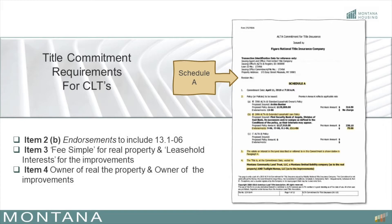Title insurance for community land trusts is handled a little differently from a regular transaction. As such, there are additional requirements that we need to have in order for Montana Housing to purchase the loan. The title commitment must be an extended leasehold loan policy, listing all the endorsements 9-06, 22-06, 8.1-06, and including the 13.1-06 endorsement as part of the Schedule A, number 2, B.